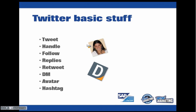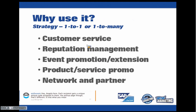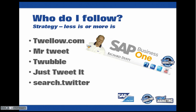Even if people aren't following you as an individual, put a hashtag related to your topic in your tweet and people following that hashtag will see you. From there, they might decide to follow you directly. Why use Twitter? Customer service, reputation management, promoting events, promoting your products or services, building your network and partner community. You can use it for one-to-one engagement or one-to-many. Who should you follow? There are directories like Twello.com — kind of like a yellow pages for people on Twitter — or search.twitter.com. Strategy before tactics: engage in conversations, ask questions, answer questions, retweet other people's content, send replies to tweets, and use Twitter tools to automatically send out your blog posts with links back to your blog.